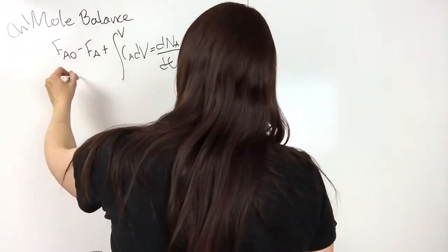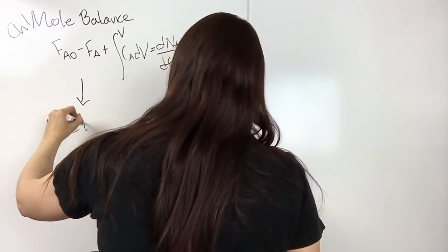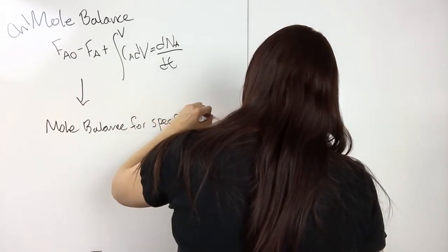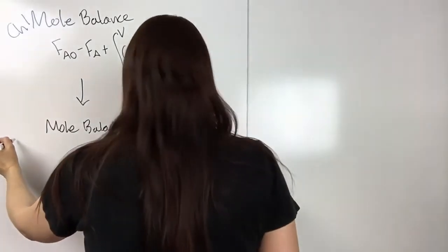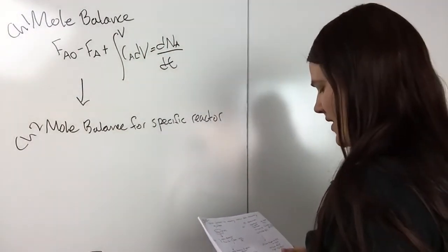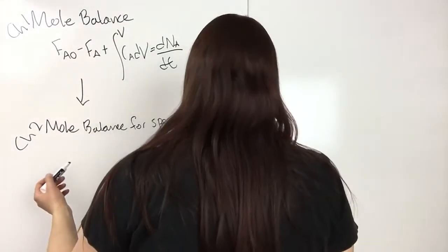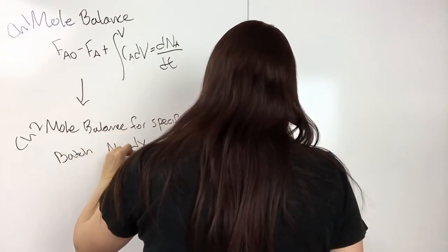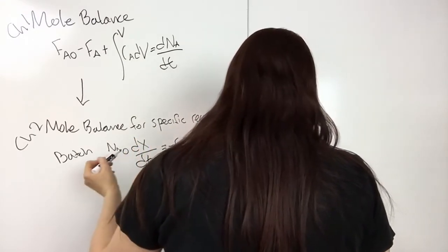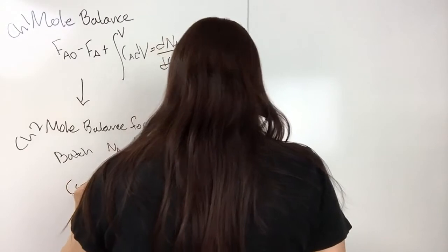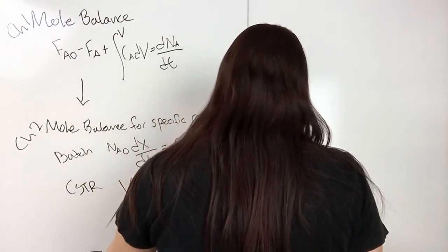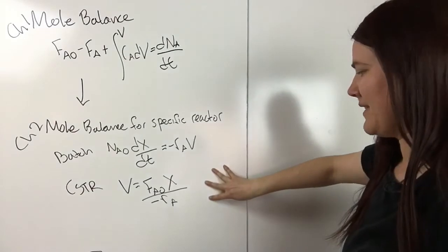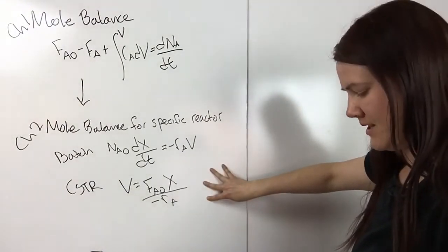So that's the next step. So, where you go to a mole balance for specific reactor. And this was chapter two. So this is where they, where we started writing the mole balances in terms of conversion. So then you had, so for instance, batch was NA naught DX DT is equal to minus RA V. CSTR was the volume is equal to FA naught X over minus RA. And I'm not going to write down the other two, but. So you remember these. So you would go to, you would write this down depending on what kind of reactor you have.